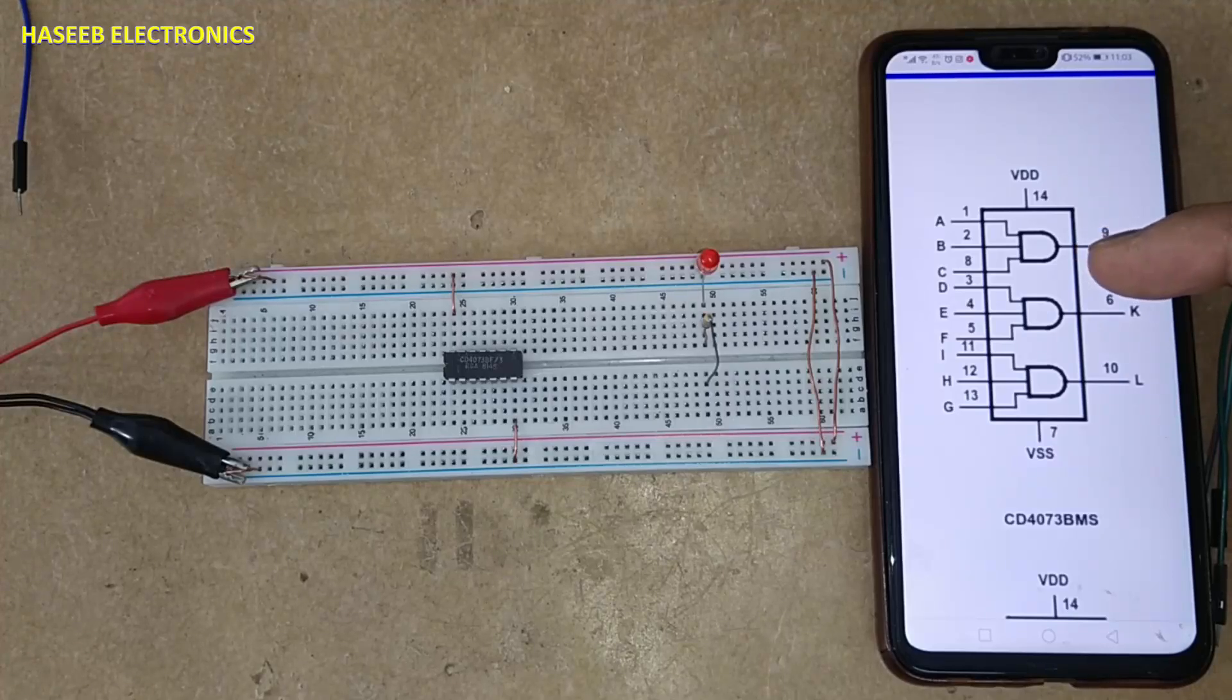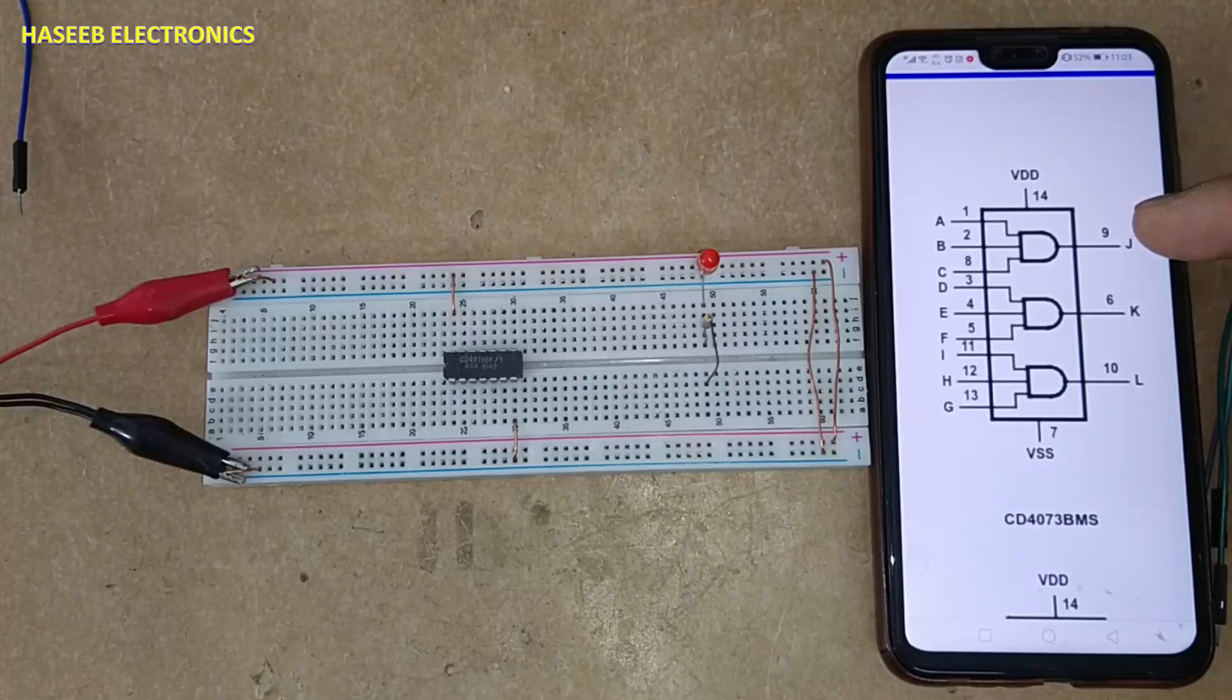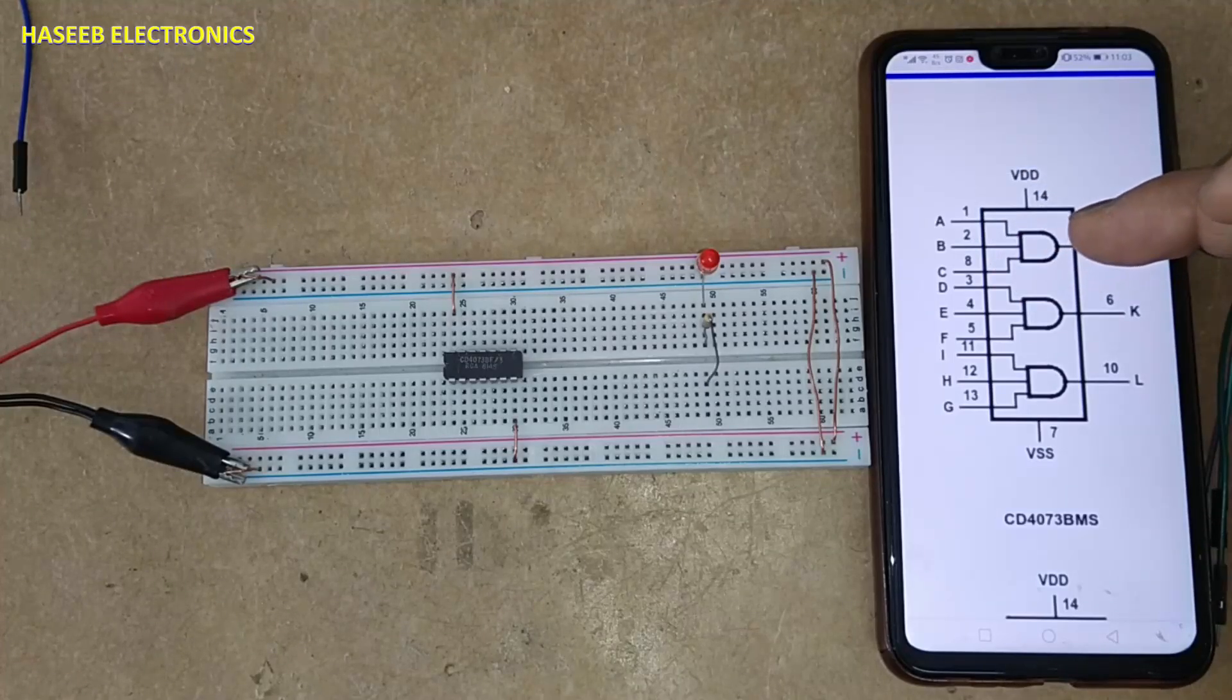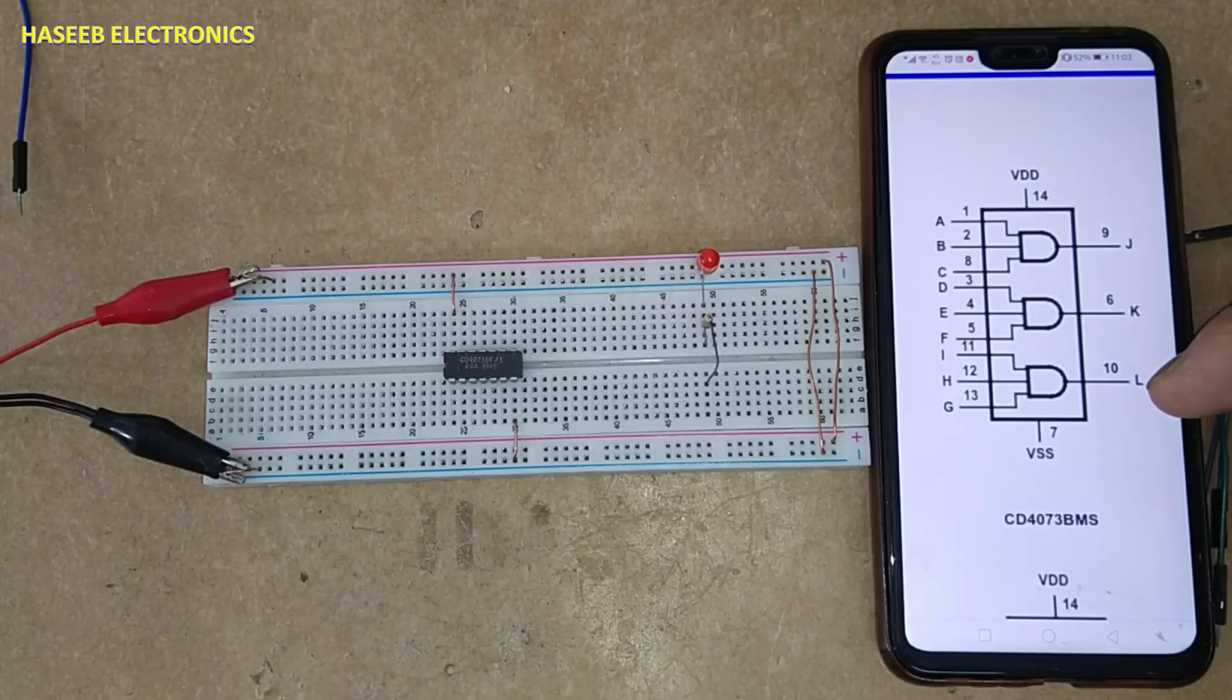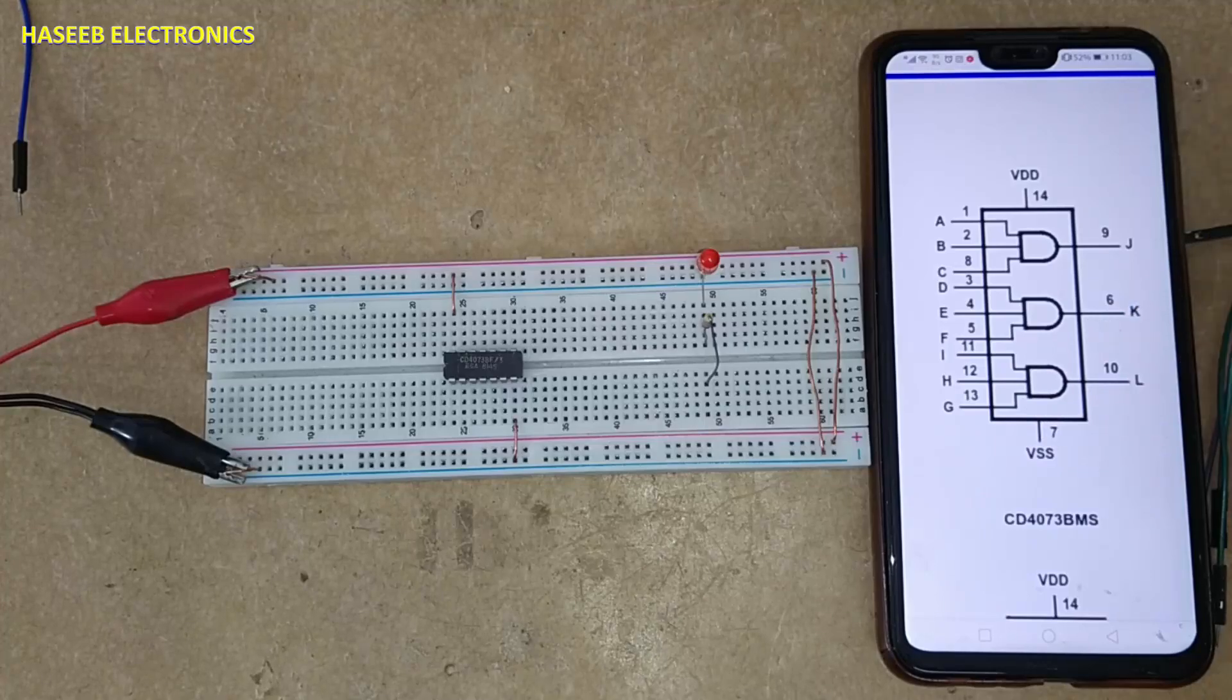It is a triple 3-input AND gate. Pin 9 is the output from the first gate with inputs at pins 1, 2, and 8. Pin 6 is the output of the second gate with inputs at pins 3, 4, and 5. Pin 10 is the output of the third gate with inputs at pins 11, 12, and 13.